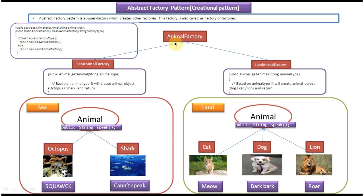Basically, this animal factory is called the abstract factory and it acts as a super factory for sea animal factory and land animal factory. It is responsible for creating the factory objects — either a sea animal factory object or a land animal factory object. So now if you read this definition, you will understand clearly: abstract factory pattern is a super factory which creates other factories. This factory is also called factory of factories.